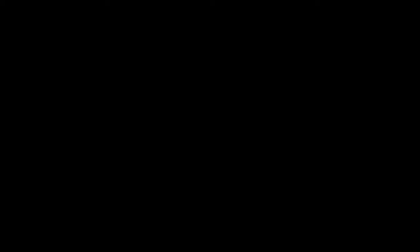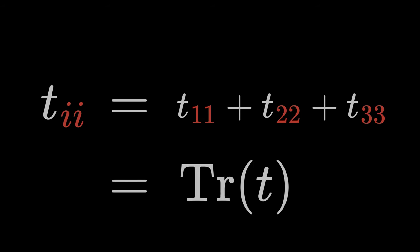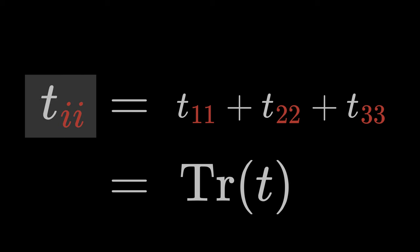If we contract a second-order tensor Tij, then the contraction is also called the trace of the tensor. The result is a zero-order tensor, that is a scalar.